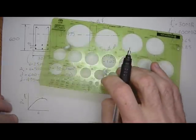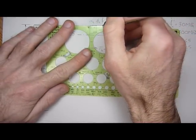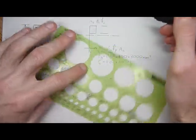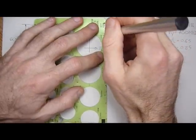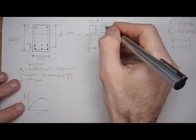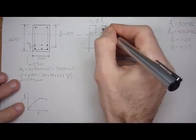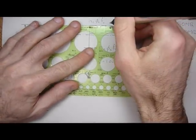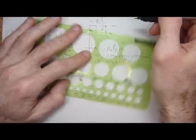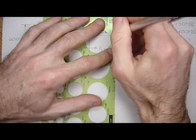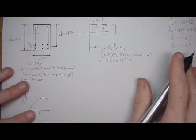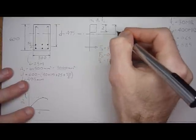Now, the height of the stress block is called A in our codes. So there's A right there. And then the distance to neutral axis is here. Neutral axis is C.